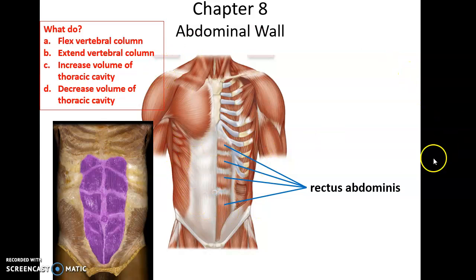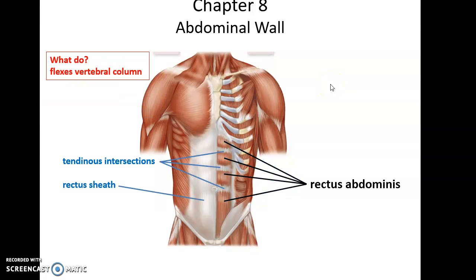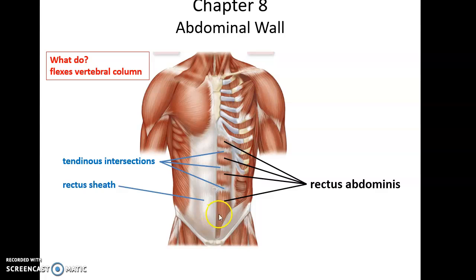Muscles in the abdominal wall: first up is rectus abdominis. We have two rectus abdomini muscles lying next to each other — a thin sheet of muscle. It flexes the vertebral column; when it contracts, it pulls on the ribs and sternum, causing you to bend your back, to bow. The rectus abdominis has little extra bits of tendinous tissue called tendinous intersections, which is why when the muscle is built up from doing lots of sit-ups, only those regions get thicker, giving the person that six-pack look.